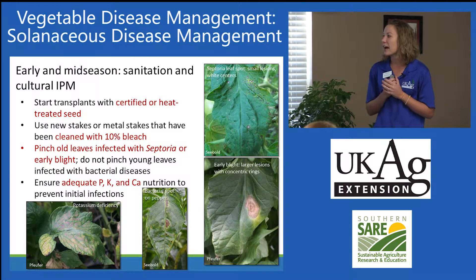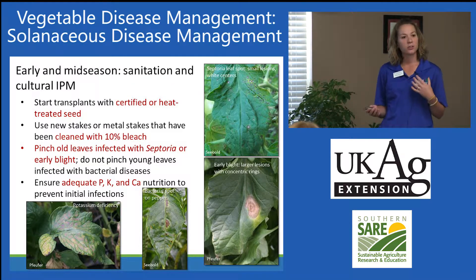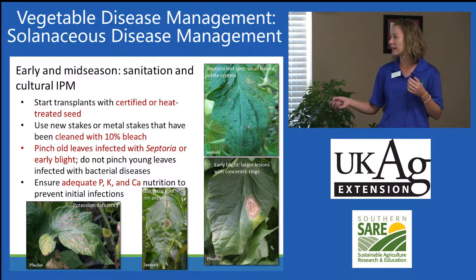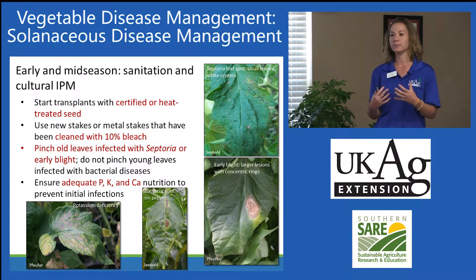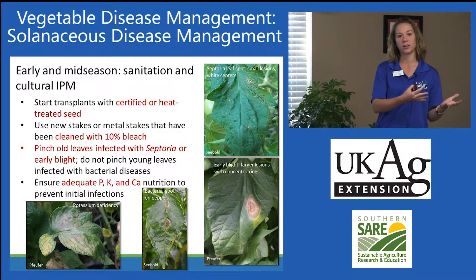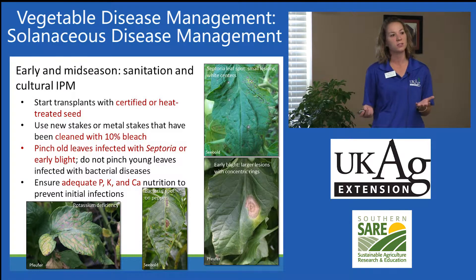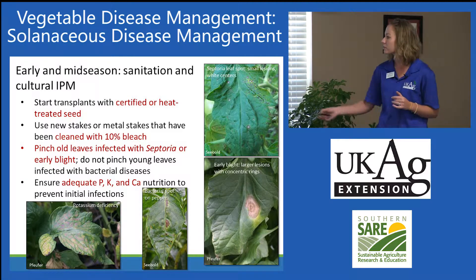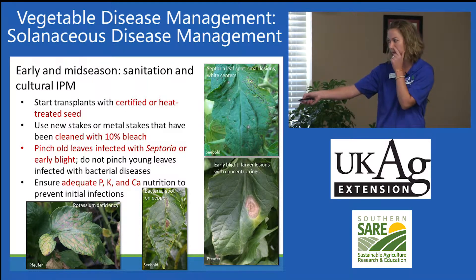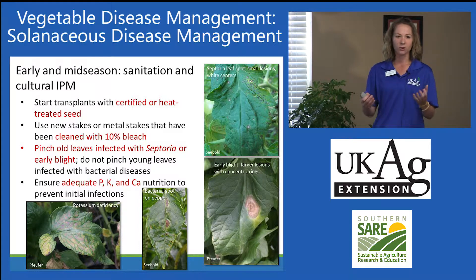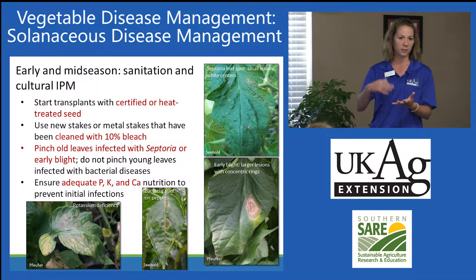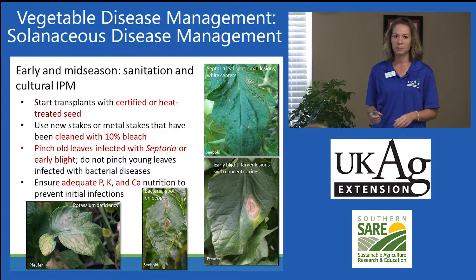Ensure adequate plant nutrition. There are some connections between early blight and inadequate potassium nutrition, especially in those lower leaves. By ensuring that plants are well nourished, an unstressed plant is one that is better able to resist pathogen infection. This is a photo of potassium deficiency in lower tomato leaves — they can even get kind of leathery. Those leaves overall aren't contributing much photosynthetically to the plant's general metabolism, so you can just remove them.